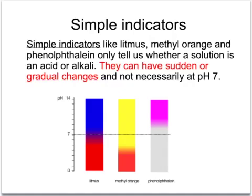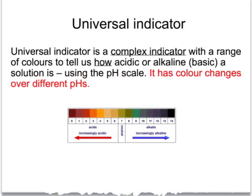However, they don't necessarily have sudden changes, and the change, for example, for phenolphthalein may not be at neutral at pH 7. Universal indicator is a complex indicator, and it gives us a range of different colours to tell us not just whether a solution is acidic or alkaline, but also how strong an acid or an alkali it is.